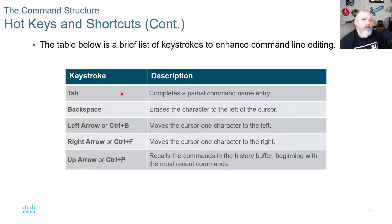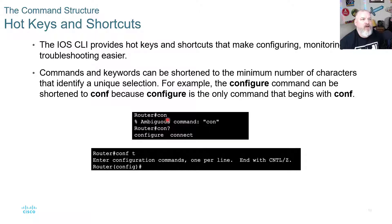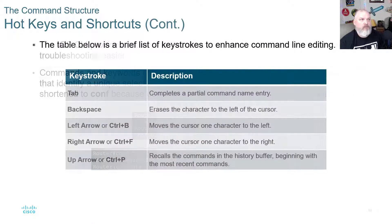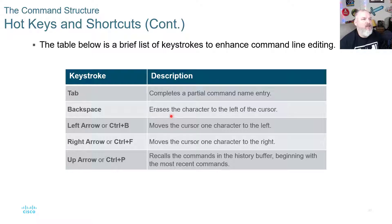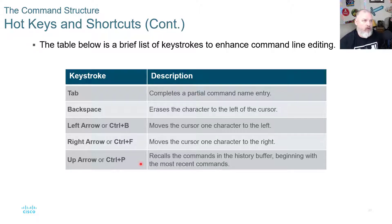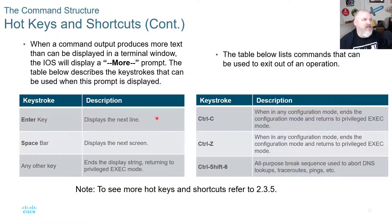You can use the Tab key to complete a command — as long as what you've typed so far is unique, pressing Tab will complete the rest, similar to how Linux shell completion works. Backspace erases the character to the left of the cursor. The left arrow or Control+B moves the cursor one character to the left; the right arrow or Control+F moves it right. The up arrow recalls commands from the history buffer, starting with the most recent command.